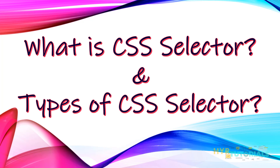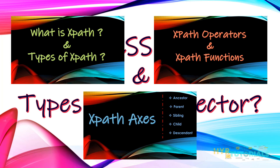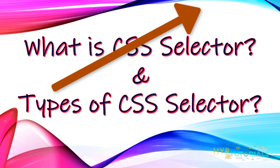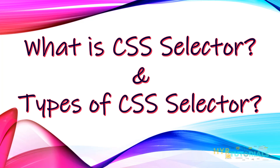XPath and CSS selector help us in combining properties to find an element in a unique manner, or help us find an element based on another element's reference. In my earlier videos, we have already seen how to use XPath, the different types of XPath, and how to write XPath. If you haven't watched those videos yet, please click on the link. We have already completed XPath and now we will look at CSS selector.